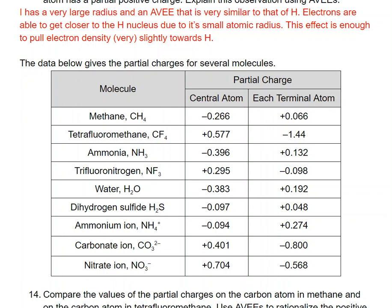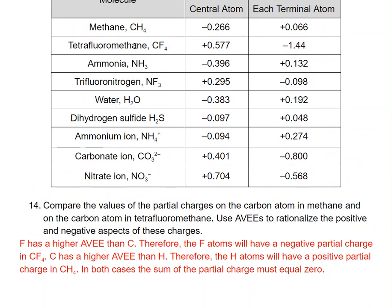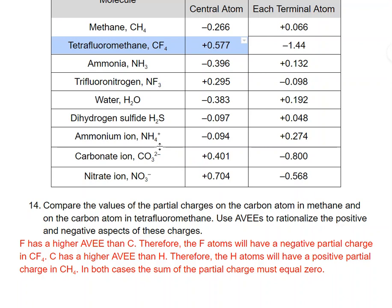This data gives partial charges for several molecules, showing the central atom and terminal atoms. Comparing methane (CH₄) and tetrafluoromethane (CF₄): in CF₄, fluorine has a higher AVEE than carbon, so the fluorine atoms have partial negative charges and carbon has a partial positive charge. In CH₄, carbon has a higher AVEE than hydrogen, so the hydrogen atoms have partial positive charges and carbon has a partial negative charge. In both cases, the partial charges should sum to zero for any neutral molecule.